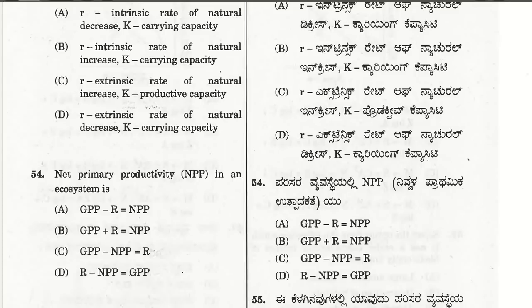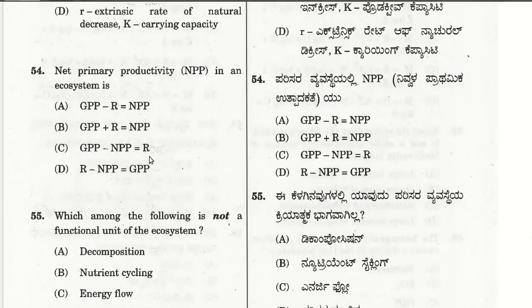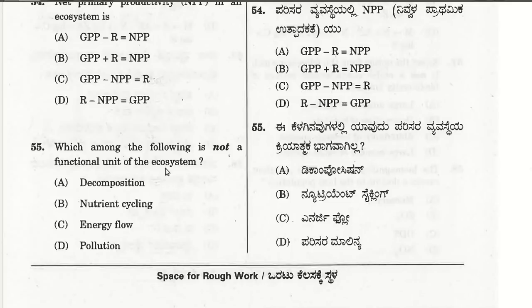The fifty-fourth question: net primary productivity (NPP) in an ecosystem is gross primary productivity (GPP) minus respiration (R). NPP = GPP − R. After respiration, what remains is called net primary productivity.